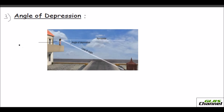Now for the angle of depression — a girl is standing on a corridor or balcony. This horizontal line is her normal eye level. She is looking down from the balcony at something, so her line of sight goes downward. The angle formed between her eye level and her line of sight, looking downward, is the angle of depression — also called the angle of dip.